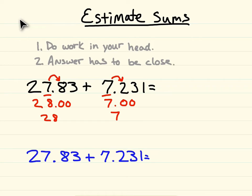So now we have 28 plus 7. 28 plus 7 equals 35, so our answer is about 35.